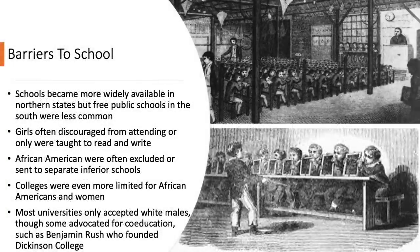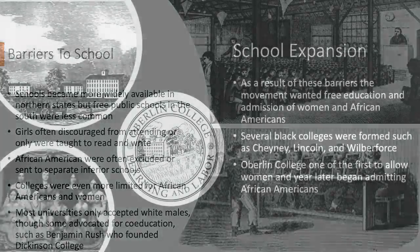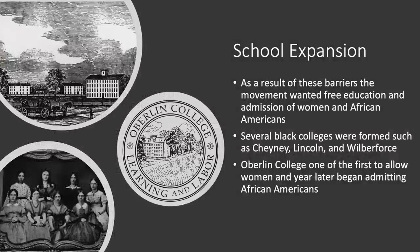Massachusetts was not the only state moving toward universal access to schools. However, while schools became more widely available in northern states, free public schools in the South were less common. Girls were often discouraged from attending or only taught to read and write. African Americans were often completely excluded or sent to separate, far inferior schools. Colleges were even more limited for African Americans and women, as most universities only accepted white males. As a result, the movement began pushing for co-education and access for African Americans.